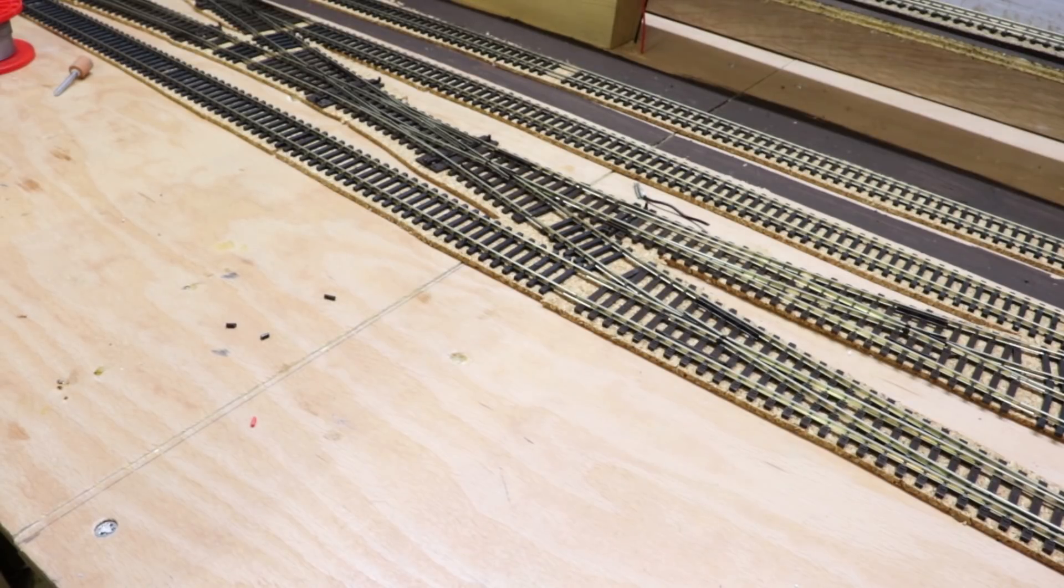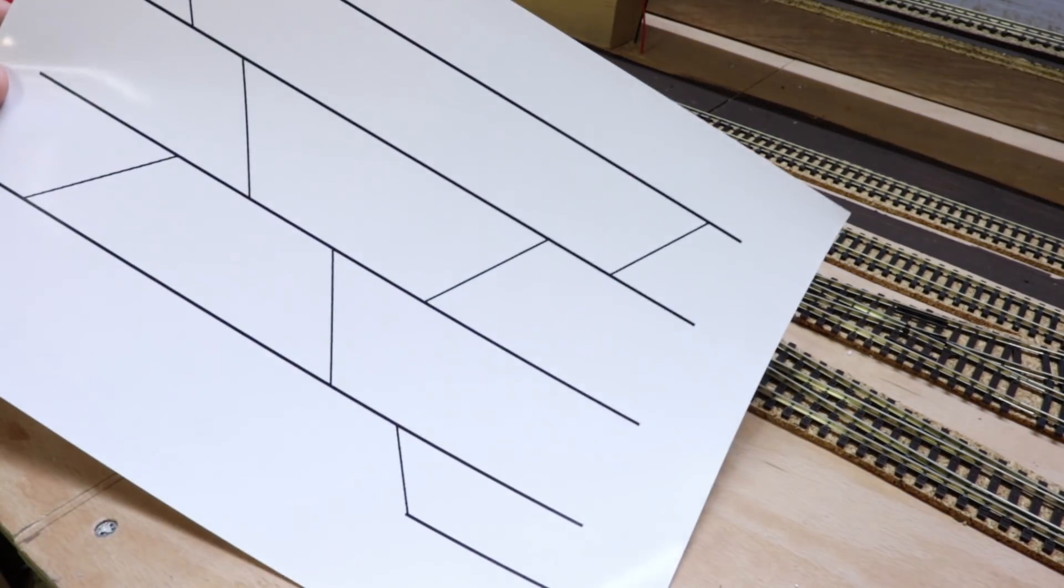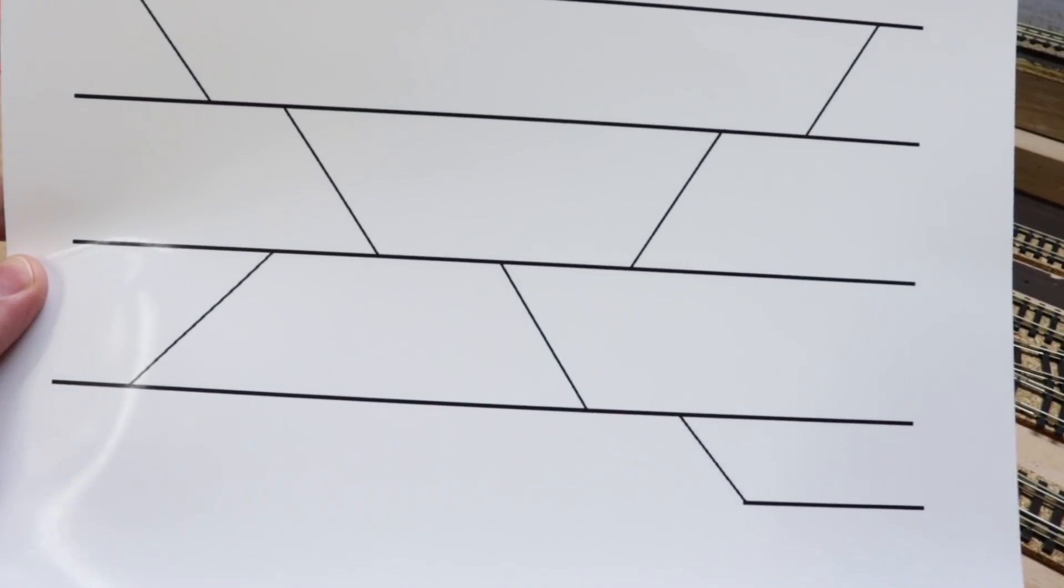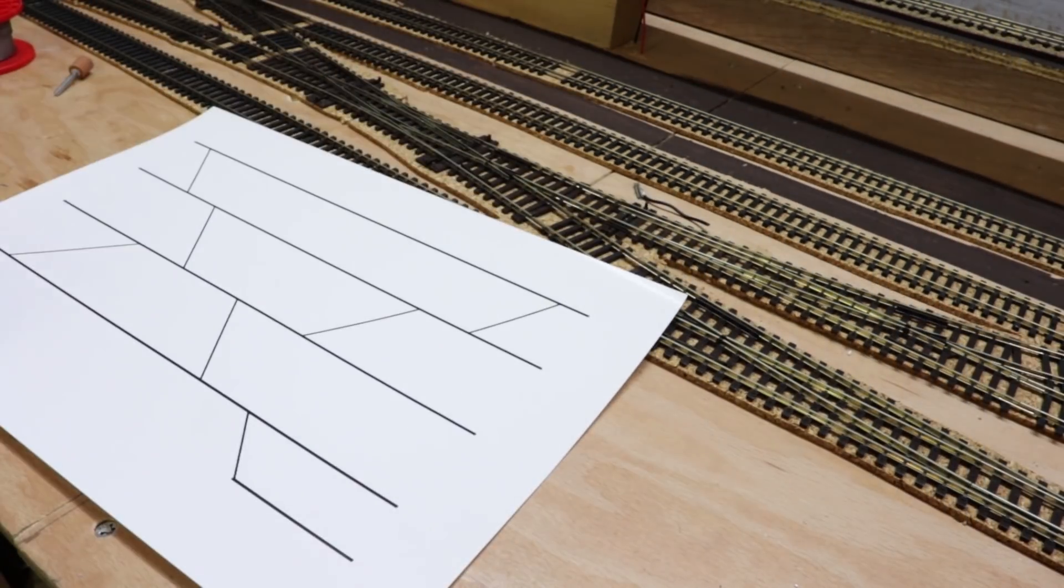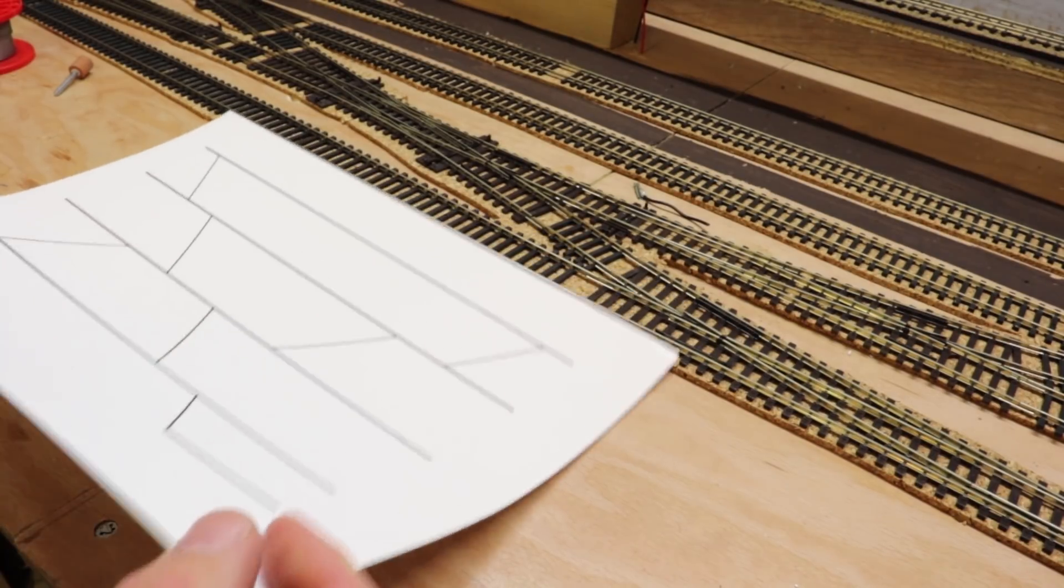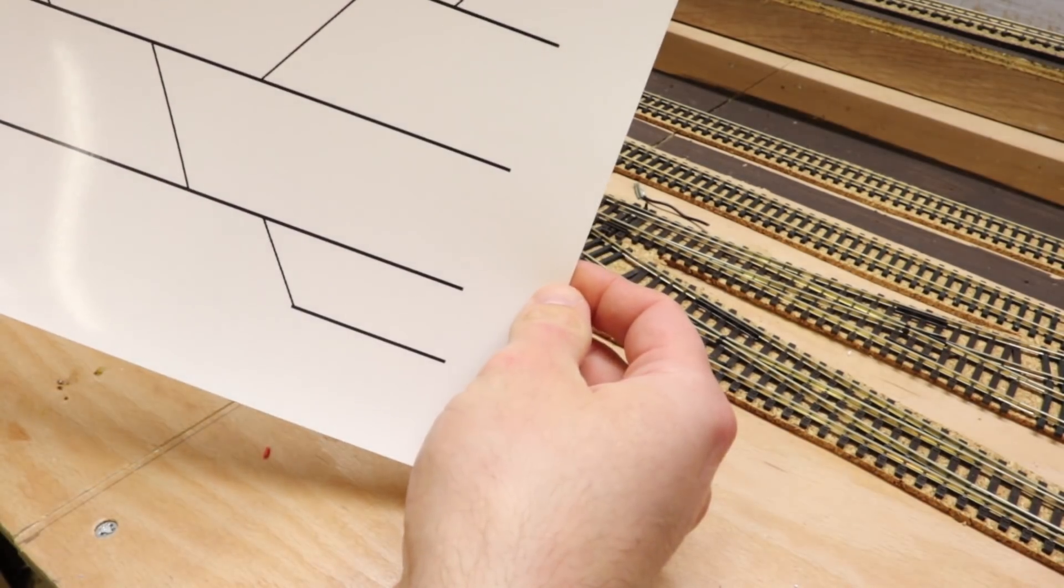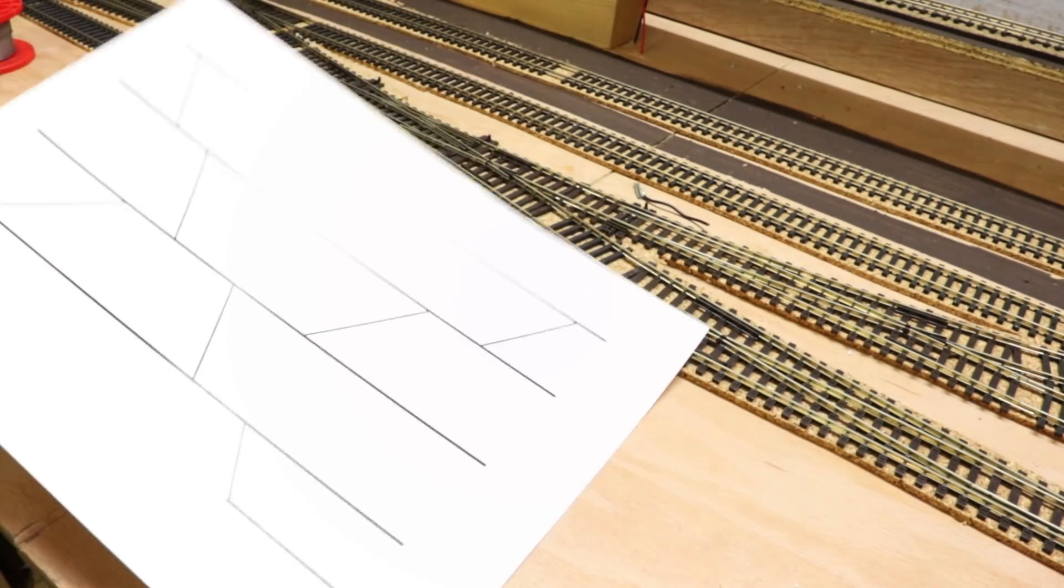So what I've done is I've gone on to Paint on the PC and I've drawn that up. It's nothing special, very basic. It's just printed on a piece of glossy photo paper and what I need to do with this is make some holes.